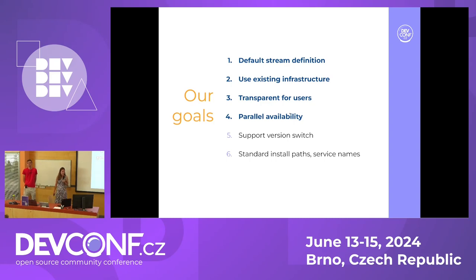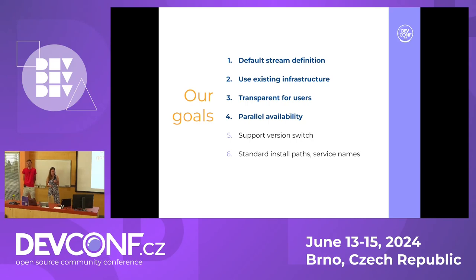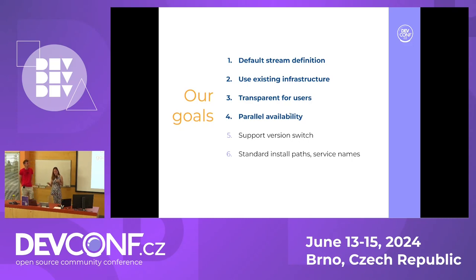The most important goals include, for example, the default stream definition. Every package should have only one default version, with some alternative versions available too. We want to use the existing infrastructure, because we knew from modules that it is not always easy to build new infrastructure and use it - it brings many challenges. And we wanted it to be transparent for users, since we are doing this for them and we want users to be able to use the multiple streams.